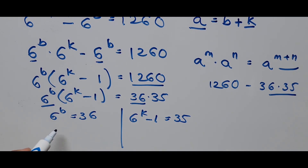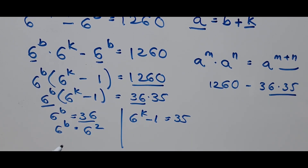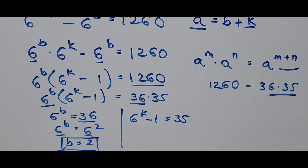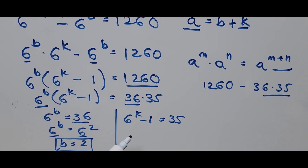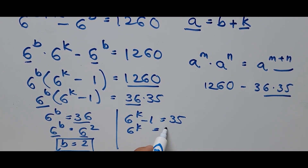From 6 to the power B equals 36, written as 6 squared, since both sides have the same base, B equals 2. On the other side, 6 to the power K minus 1 equals 35, and transposing gives 6 to the power K equals 36.